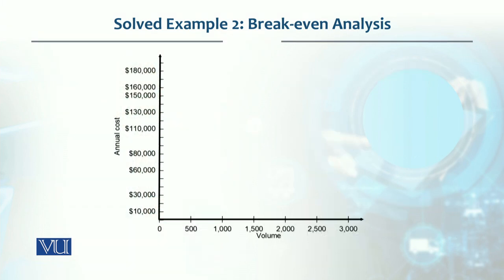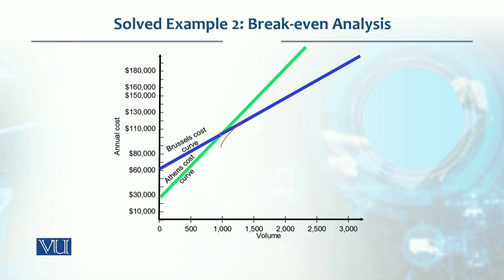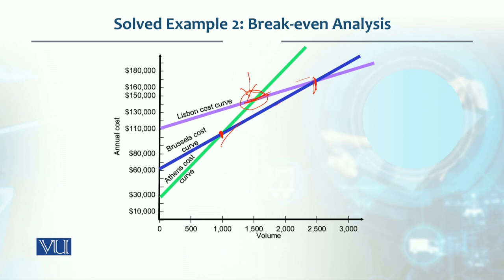Looking at this graphically — annual cost versus volume and quantity — we plot the curves. Athens' cost is the green line, Brussels' cost is the blue curve, and this is the indifference or crossover point between Athens and Brussels. Lisbon's cost is highest initially, and this is the point where Lisbon's and Brussels' lines intersect — that is the crossover point between these two locations. The Athens-Lisbon crossover falls above Brussels' cost, which is why we didn't need to calculate it.